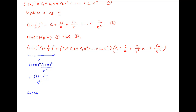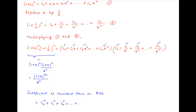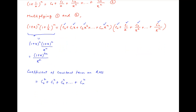On the right-hand side, the coefficient of the constant term is obtained by multiplying corresponding terms from each bracket: the first terms give C0², the second terms give C1², and so on, with the last terms giving Cn².